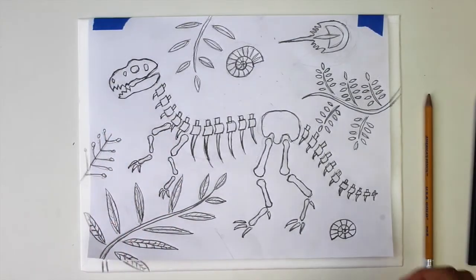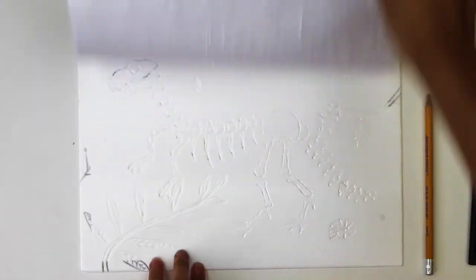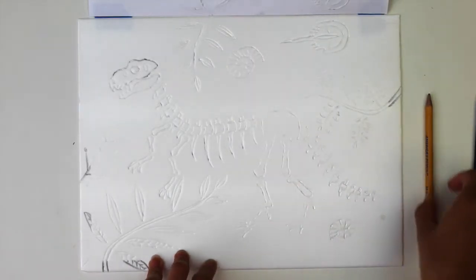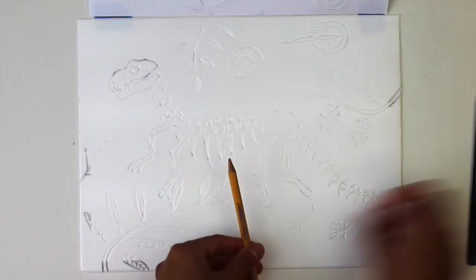Once you're finished tracing, check your styrofoam in case you missed any lines. We will now retrace the lines to make deeper indents into the styrofoam. This will produce the best result when printing.